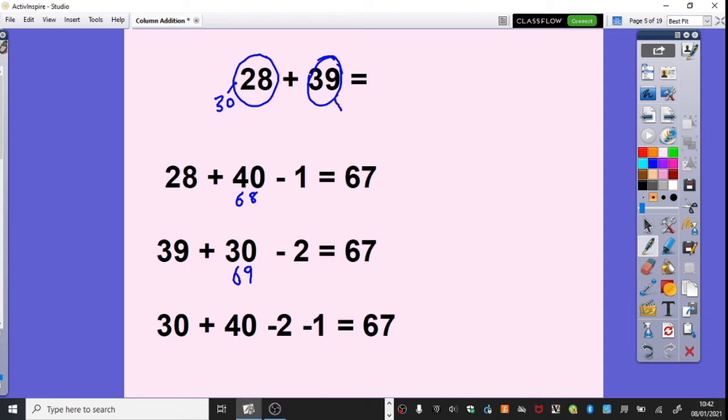Another thing we can think about is actually both numbers are very close to 10s. Is it easier to add 30, add 40, which gives us 70, minus 2 too many from our 28, obviously leaves us with 68, and then minus 1 because we've got 1 too many from our 39. So the answer there then is 67.